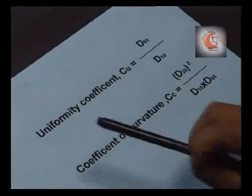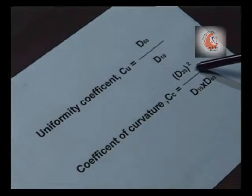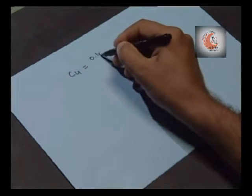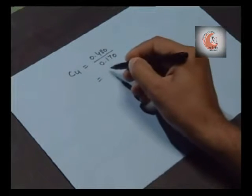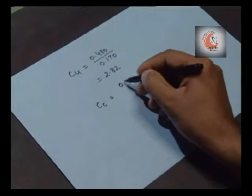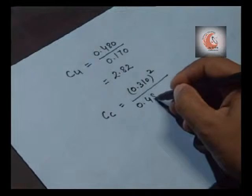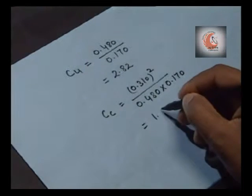Now determine the uniformity coefficient Cu, which equals D60 divided by D10, and the coefficient of curvature Cc, which equals D30 squared divided by D10 multiplied by D60. Substituting the values: Cu equals 0.480 divided by 0.170, which equals 2.82, and Cc equals 0.310 squared divided by 0.480 multiplied by 0.170, which equals 1.18.